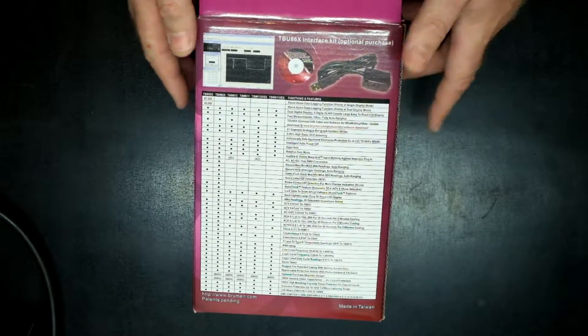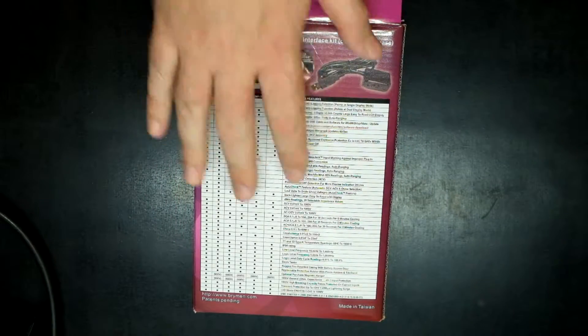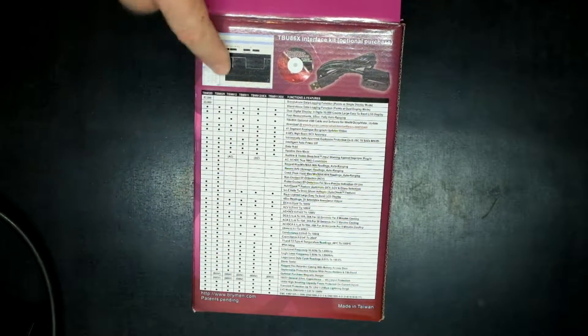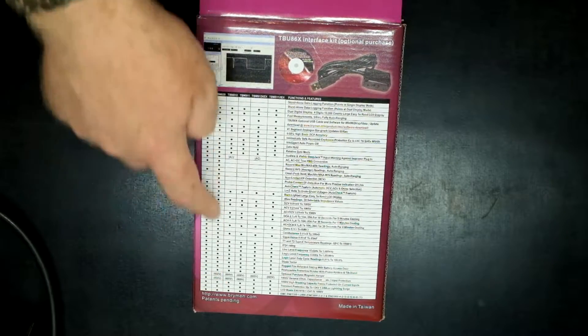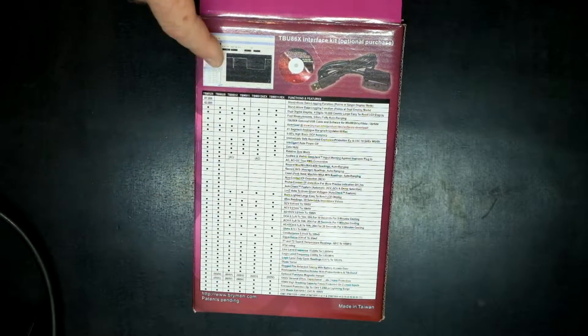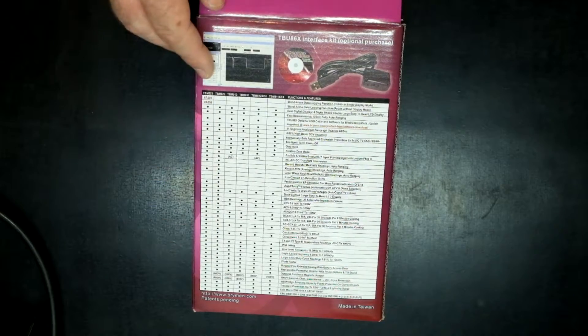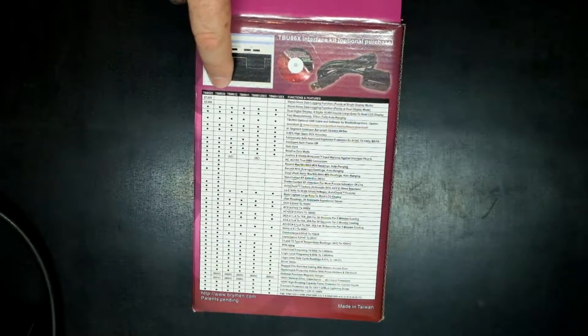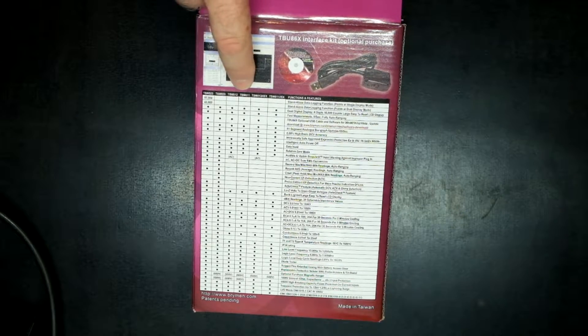If you flip the box over, you have the entire range in this series of multimeter. The TBM829 has almost everything, the 525 is the flagship recording multimeter, the 812 is one step down from the 829, and then the 811.